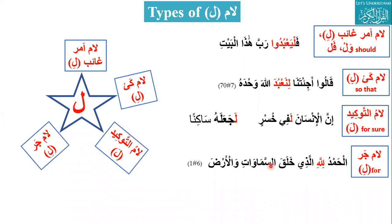The fourth type of lam is Lam Jar. We studied this when we studied jar majroor — it is one of the harf jar. It makes the noun majroor by coming before it. Like alhamdu lillahi — li is used before Allah, so lillahi means 'for Allah.' Alhamdu lillahi alladhi khalaqa as-samawati wal-ard — 'All praises and thanks for Allah, the one who created the skies and the earth.' The indication is it comes before a noun and makes it majroor. Lillahi, li rabbi — the ism after it becomes majroor, and in that case it means 'for.' Lam Jar can also be attached to pronouns, in which case it comes with a fatha on the lam.